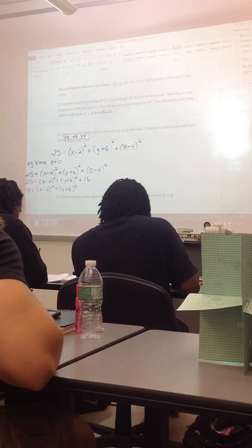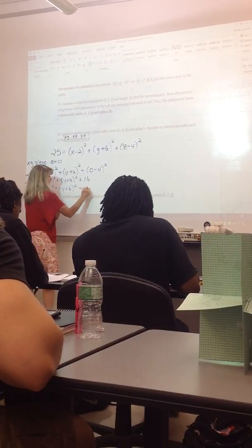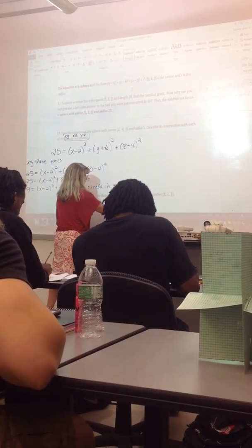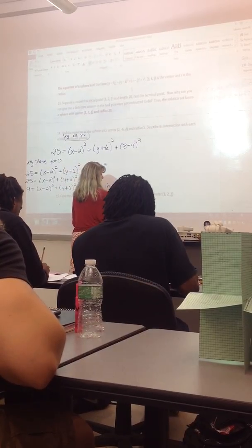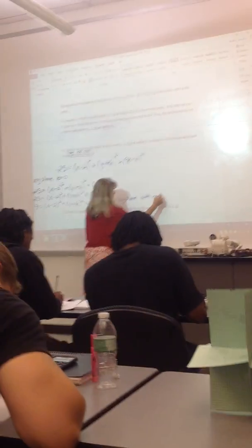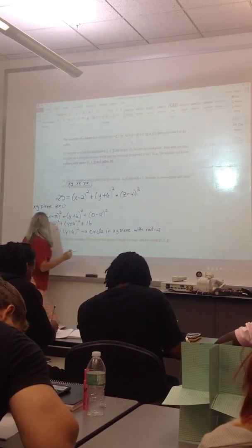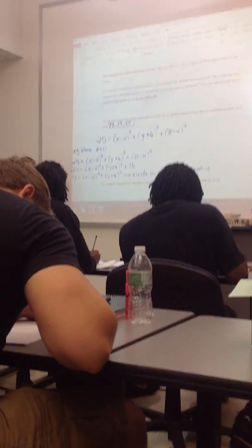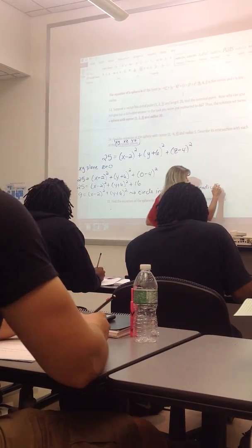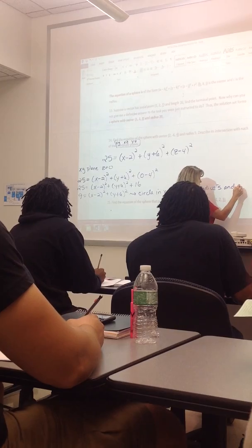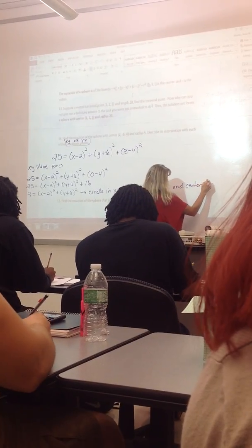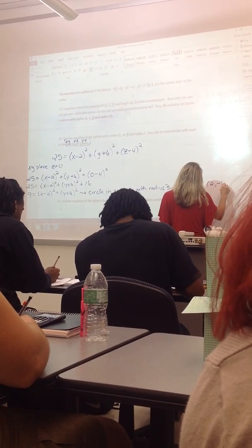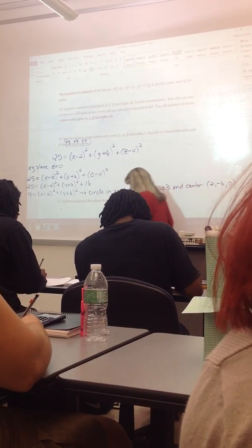Okay, so this is a circle in the xy plane with radius, with radius what? What's the radius? 3. And center 2, negative 6. If you want to put 0 for the z, you can.